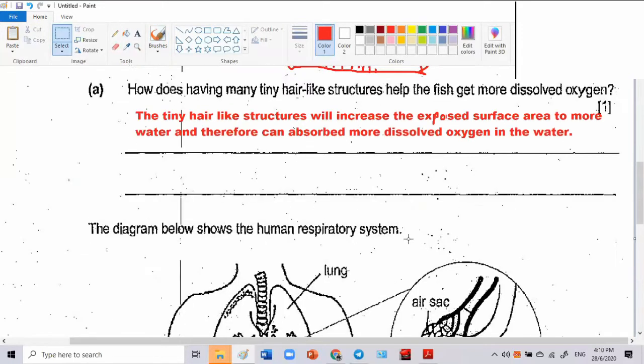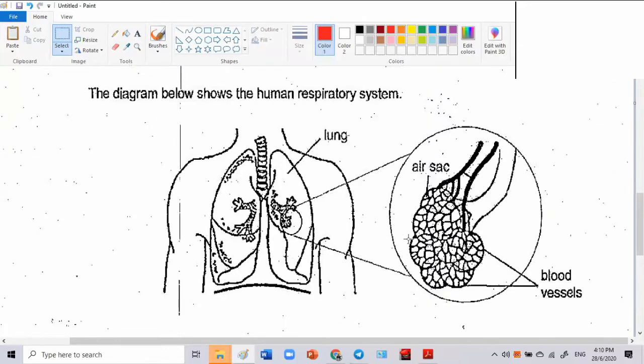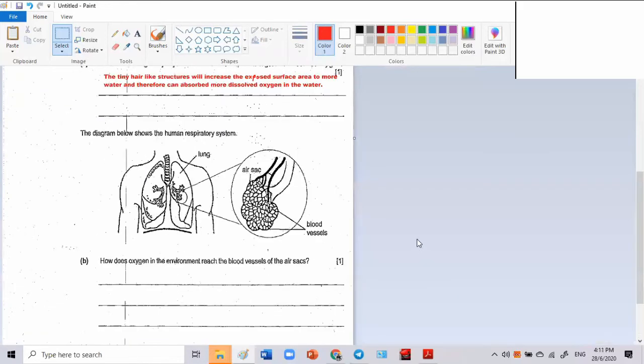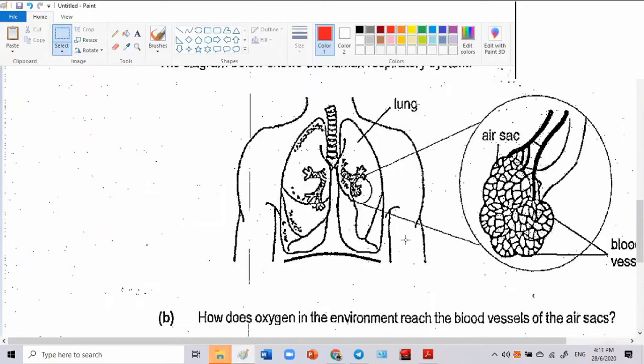The diagram shows the human respiratory system. How does oxygen in the environment reach the blood vessels in the air sac? You understand what he's talking about? Oxygen in the environment reach the air sac. So, the oxygen is in the environment. How does the oxygen in the environment, oxygen in the air, reach the blood vessels in the air sac from the environment? This is the environment. In the air. So, how to answer?